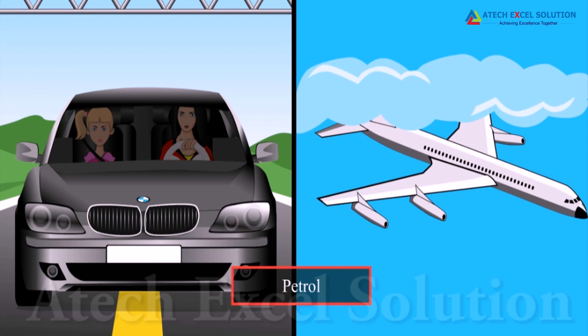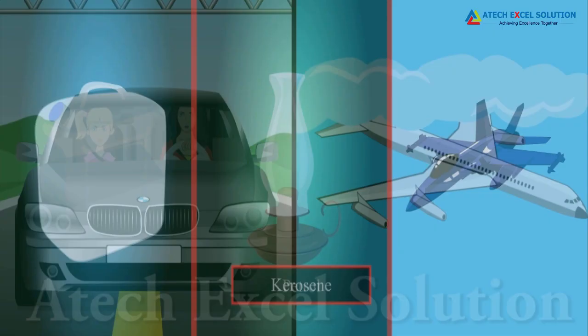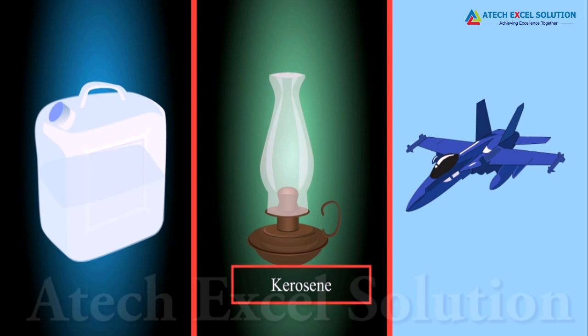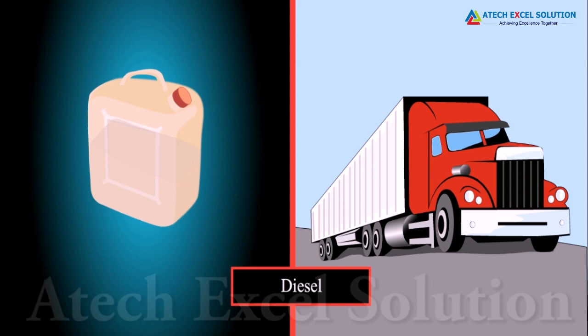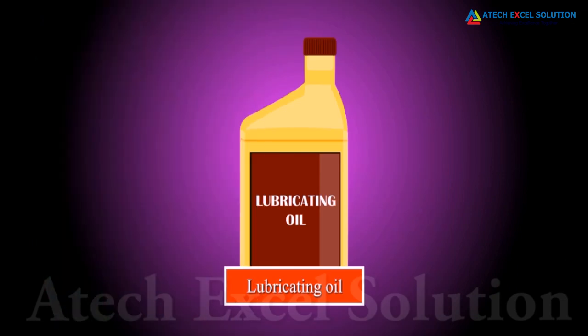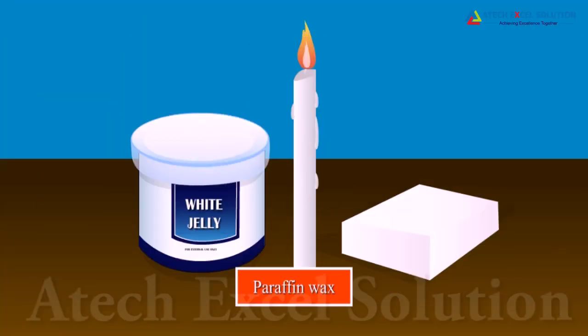Kerosene is used as fuel for stoves, lamps and for jet aircrafts. Diesel is used as fuel for heavy motor vehicles and electric generators. Lubricating oil is used for lubrication in vehicles and machineries. Paraffin wax is used for preparation of ointments, candles and Vaseline.